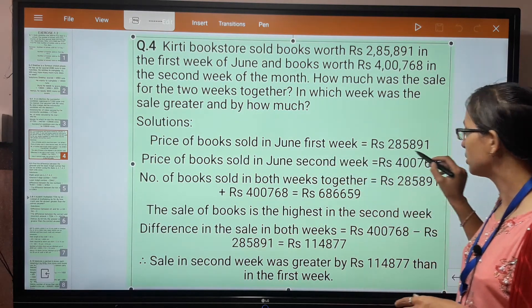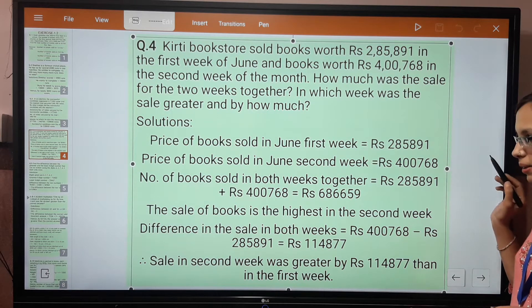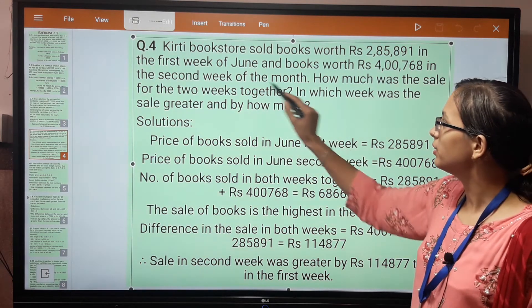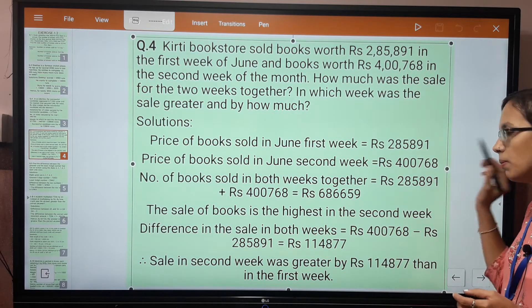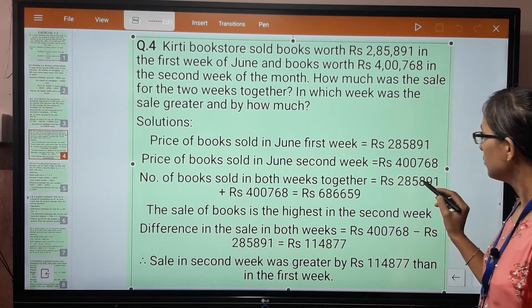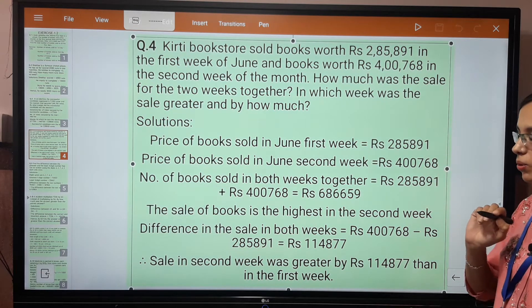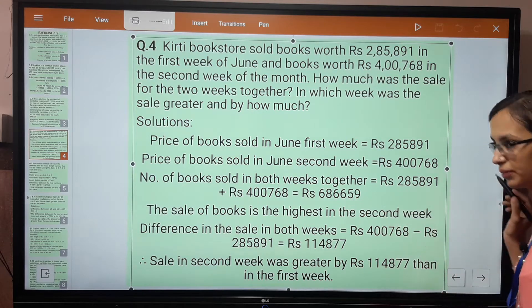Price of books sold in first week and sold in second week are given. When the word 'together' is used, we add both weeks. When we add first week and second week amounts, the answer is 6,86,659.